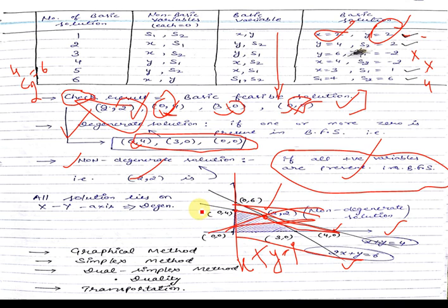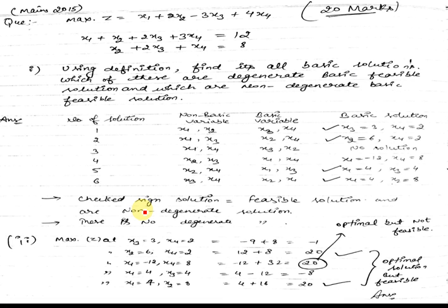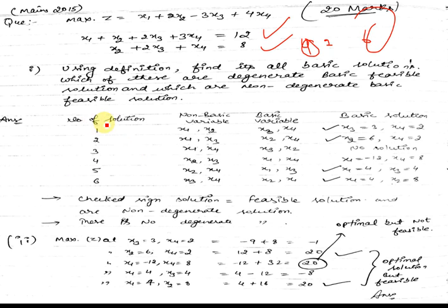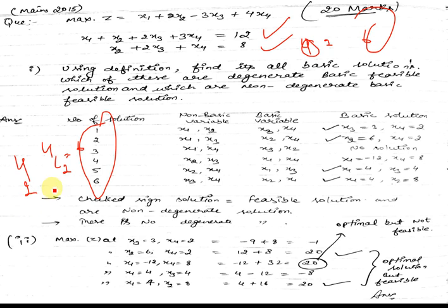Now we will study the question that appeared in the main examination 2015. The question was to maximize z, with two equations given — one equals 12 and the other equals 8. How many variables are there? Four variables. How many equations? Two equations. So how many solutions will there be? 4C2 = 6. So there will be six solutions. And how many non-basic variables? 4 minus 2 = 2.